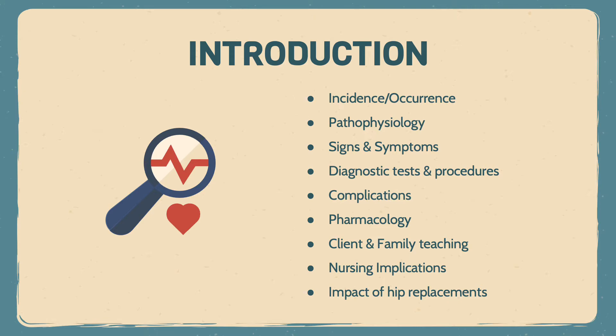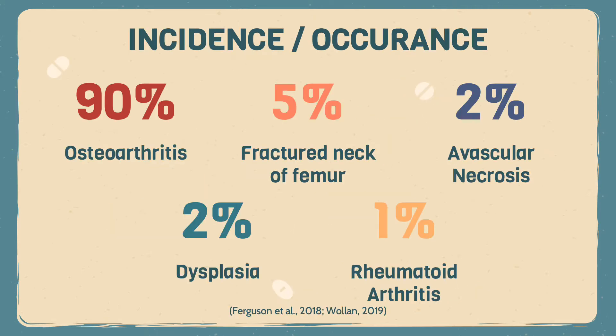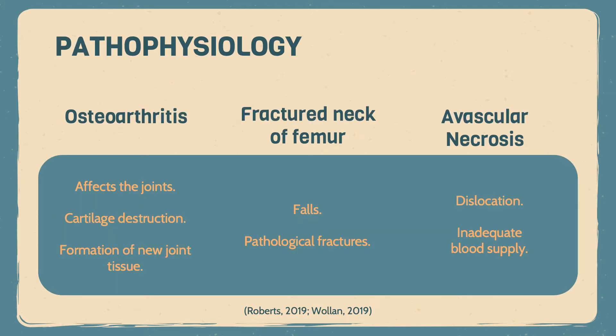Firstly, we will discuss the incidence and occurrence of hip replacements. Most hip replacements are the result of osteoarthritis; therefore, older adults generally require more hip replacements. Other indications for replacement of the hip are fractures, avascular necrosis, dysplasia, and rheumatoid arthritis.